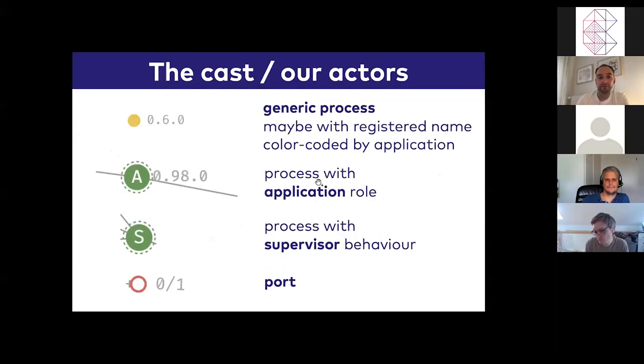Okay, so let's go through quickly the cast or actors. If there is no letter or there's a filled circle in my representation, in my graph representation of the process nodes, it always refers to a generic process, maybe represented by its PID or port identifier, or if there's a registered name around, then I do display that registered name because it makes it easier to interpret the structure of the application.